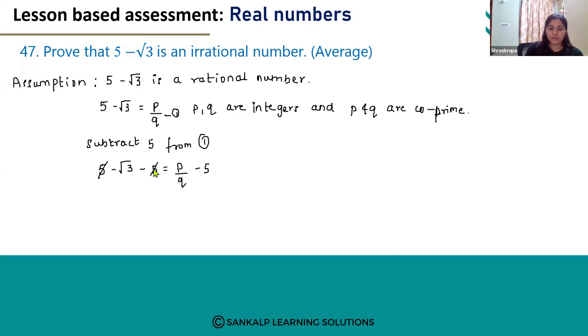Plus 5 and minus 5 will get cancelled. Minus root 3 is equal to p by q minus 5. But I don't want this minus sign here.